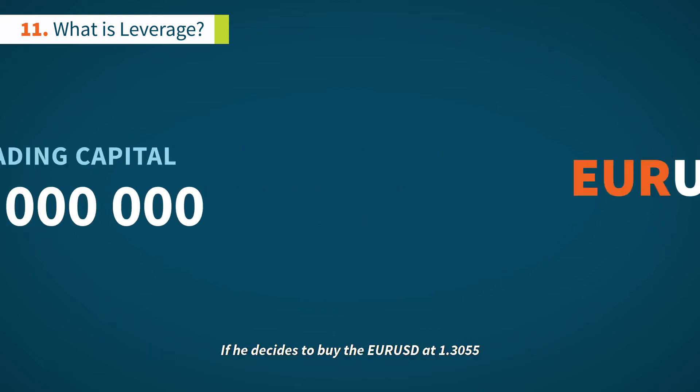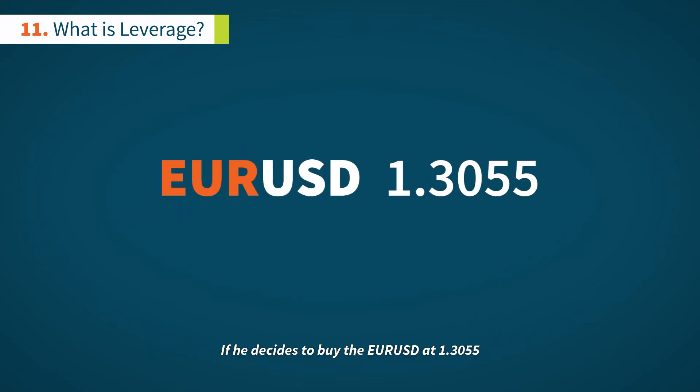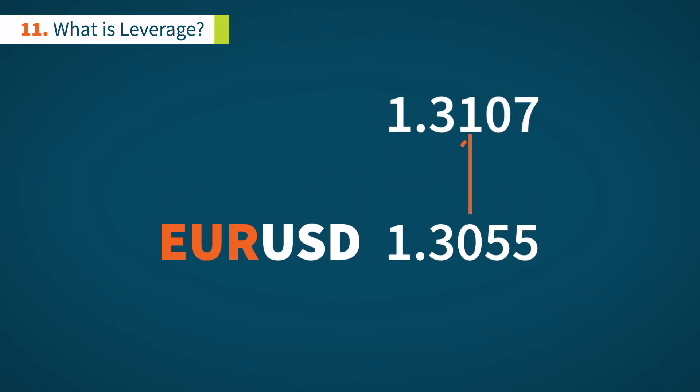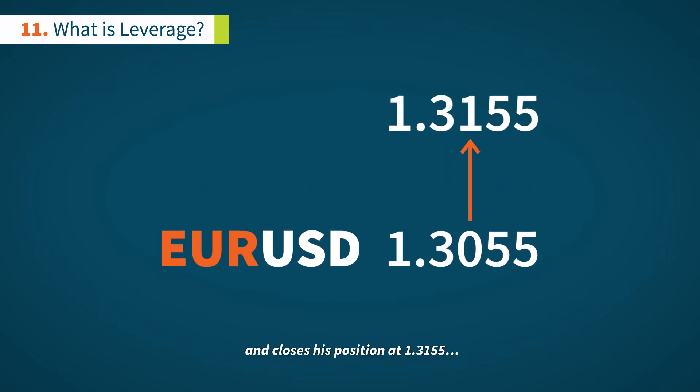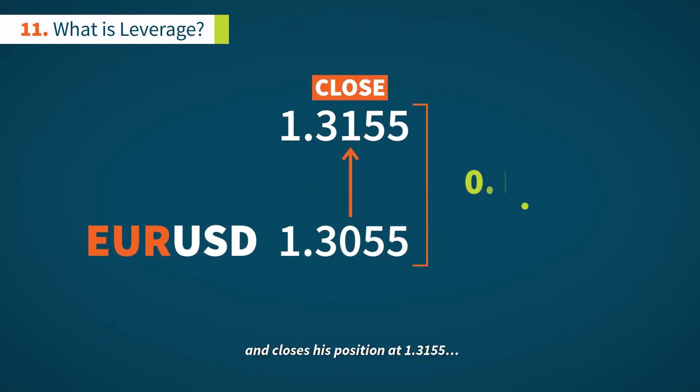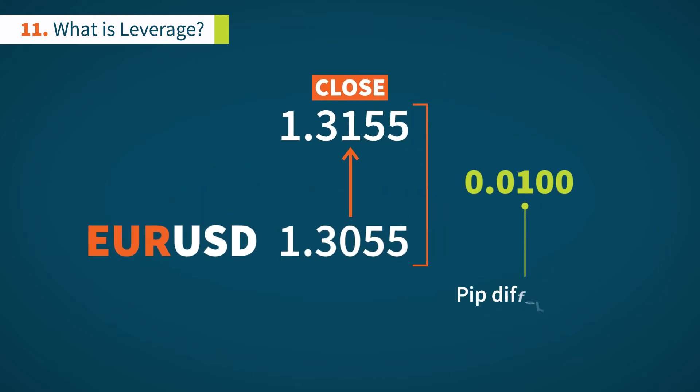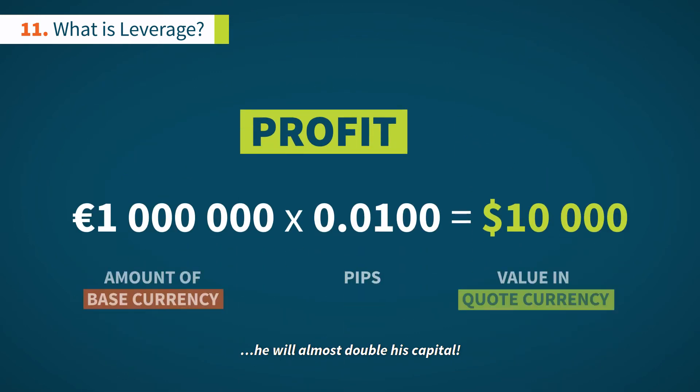If he decides to buy the EURUSD at 1.355 and closes his position at 1.3155, he will almost double his capital.